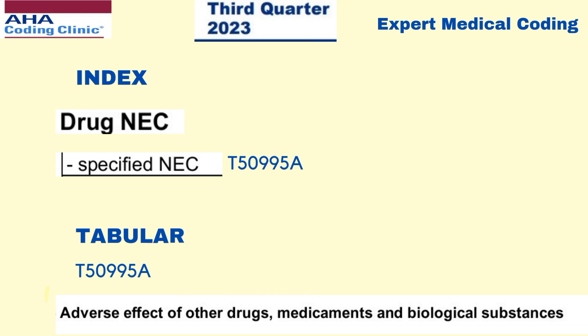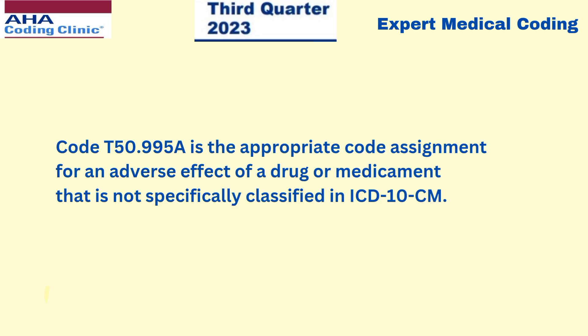For the next code, go to the table of drugs and chemicals and search for drug NEC. Under that sub-term, specified NEC - not elsewhere classifiable - it will lead you to the code T50995A. Go to the tabular and search for the description; you'll get T50995A with the description: adverse effects of other drugs, medicaments and biological substances. So two codes will be given for this scenario.